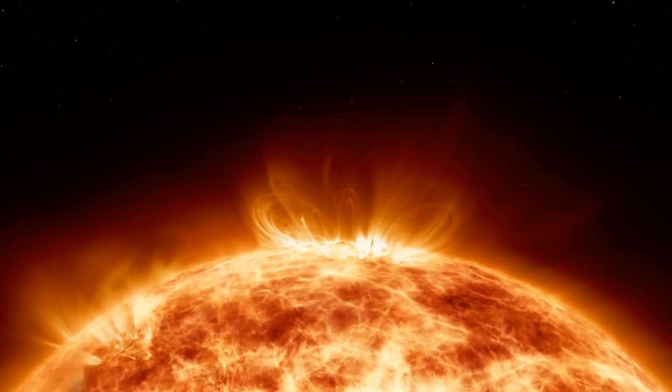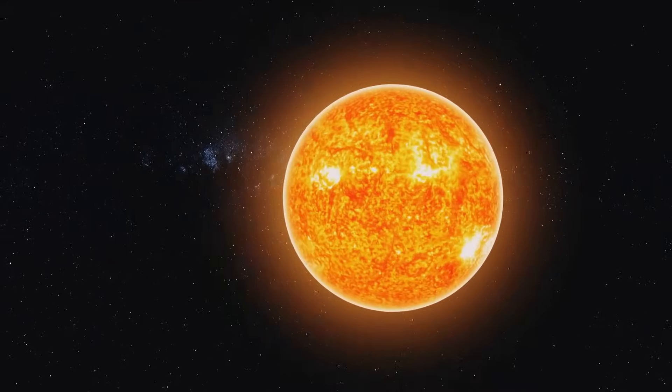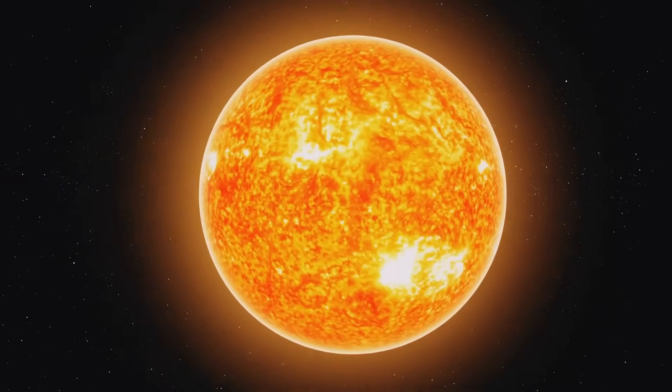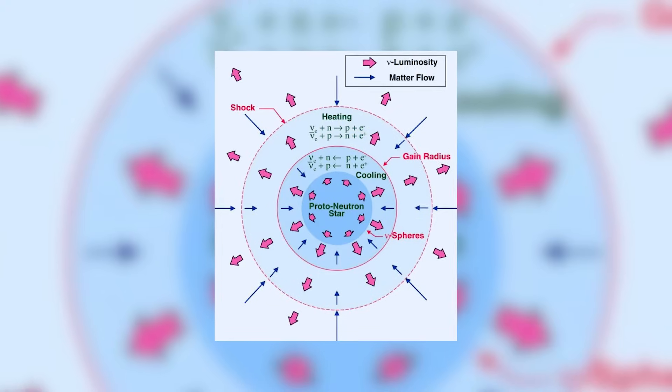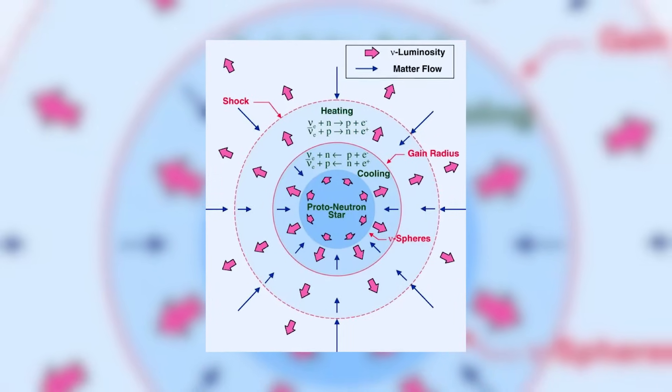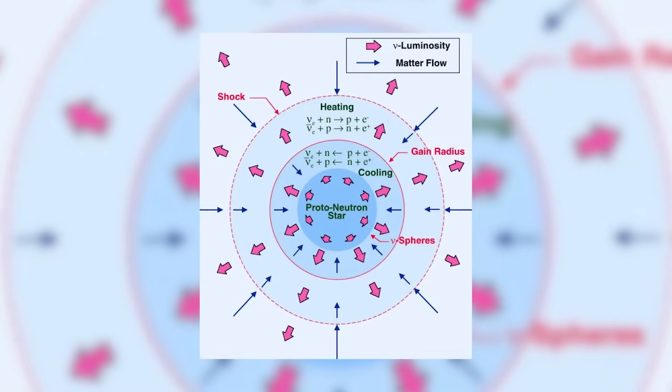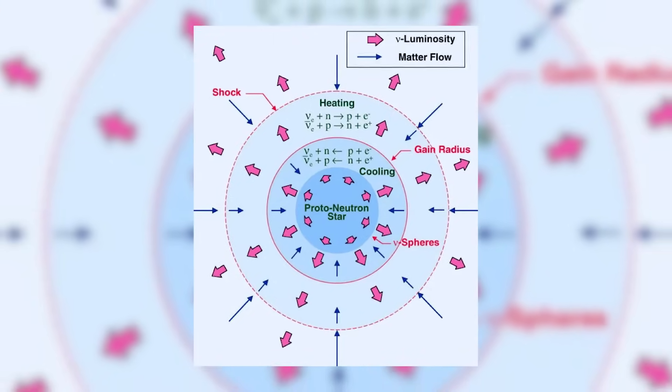The layers atop them also collapse, but rebound against the dense proto-neutron star in the core, which triggers an incredible burst of nuclear fusion. As the layers pile up, they rebound, creating waves of fusion, radiation, and pressure that cascade through the star.